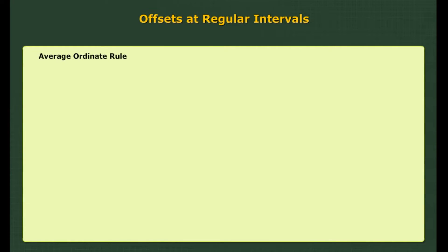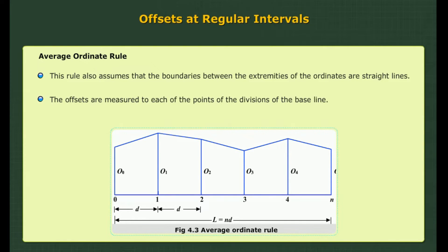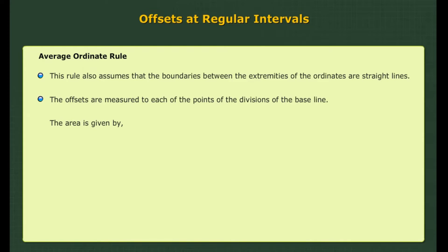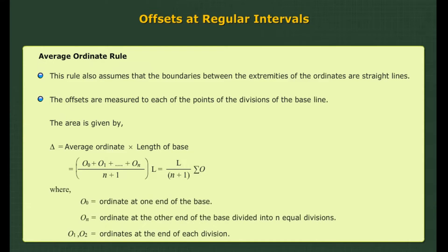Average ordinate rule: This rule also assumes that the boundaries between the extremities of the ordinates are straight lines. The offsets are measured to each of the points of the division of the baseline. The area is given by Δ = average ordinate × length of base, where O₀ = ordinate at one end of the base, Oₙ = ordinate at the other end of the base, with the base divided into n equal divisions, and O1, O2 = ordinates at the end of each division.